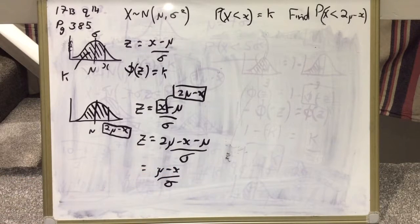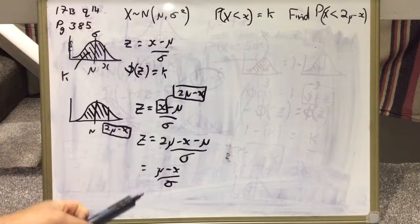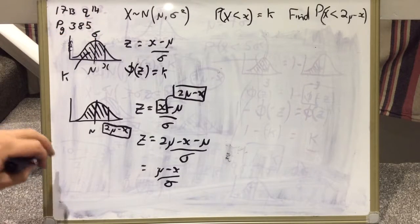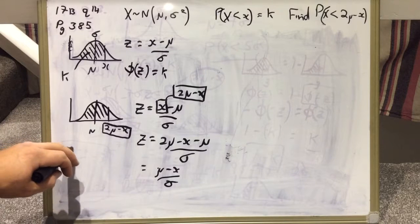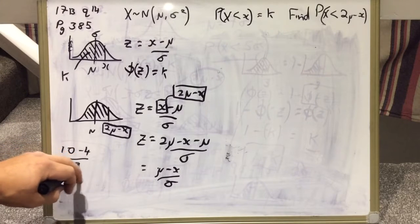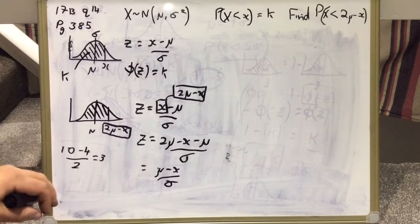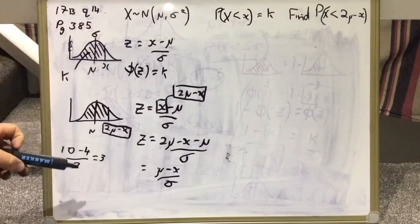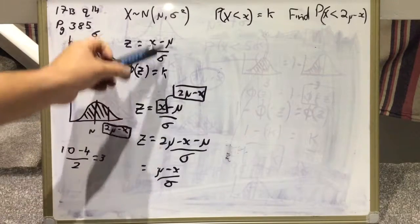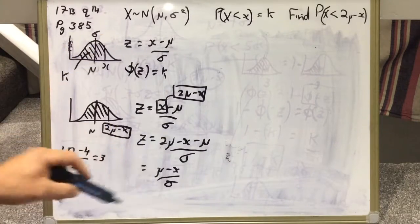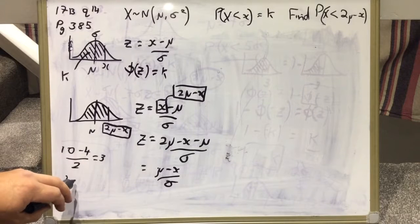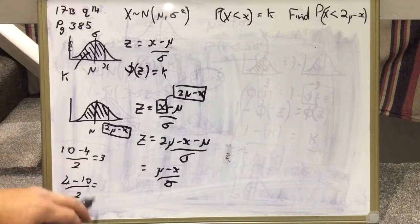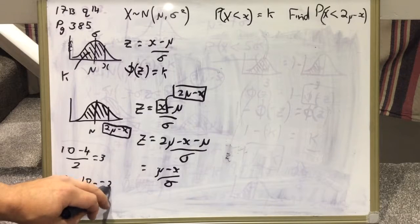You'll notice hopefully that X take mu on sigma is linked to mu take X on sigma. Let's figure out what's going on there. If we just plug in 10 take 4 on 2, for example, equals 3. I'm just making up numbers here to show you what's going on. If I just did 4 take 10 on 2, that'd be minus 6 over 2, which is negative 3.